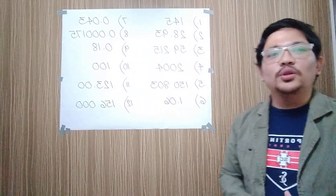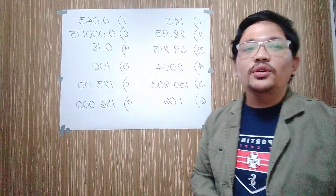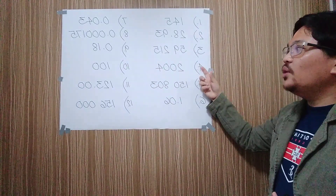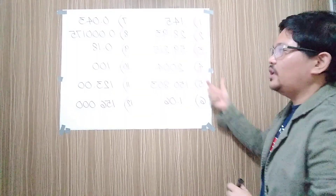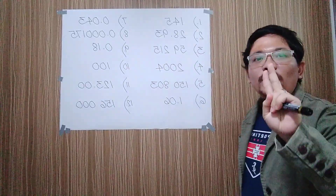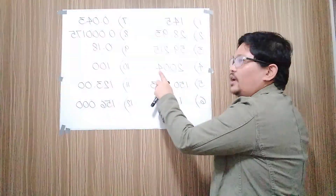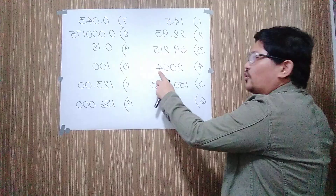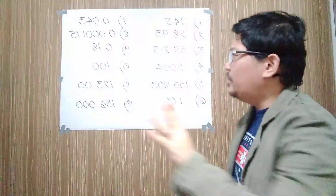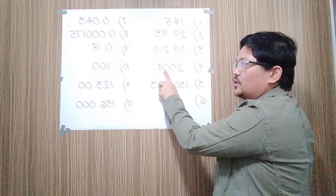Let's have the second rule. The second rule says that in-between zeros are always significant. For example, we have 2004. In 2004, the two zeros are placed in between two non-zero digits — two and four. Therefore, in 2004, there are four significant figures, because both zeros are significant.